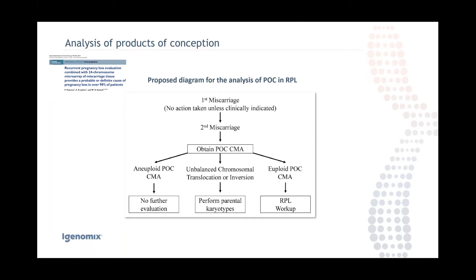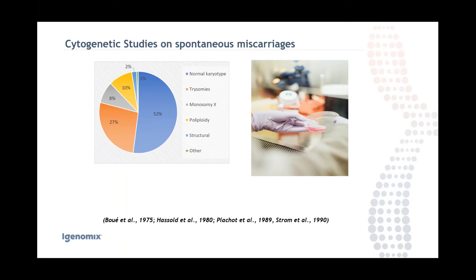What we propose is: for a first miscarriage, no action is taken unless clinically indicated. At the second miscarriage, obtain the products of conception and perform molecular chromosomal analysis. If you find an aneuploidy, no further evaluation is needed — you already know the cause. If you find an unbalanced chromosomal translocation or inversion, perform parental karyotypes. If the POC analysis is euploid, then proceed with the RPL workup.